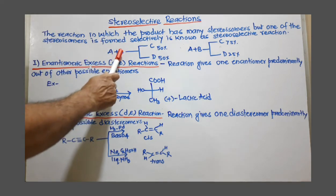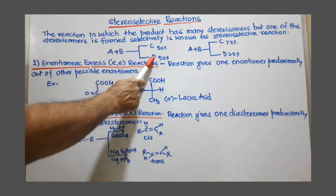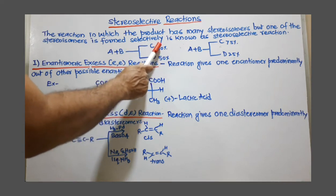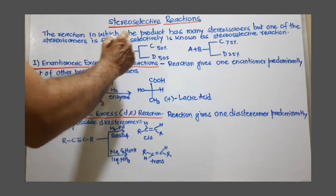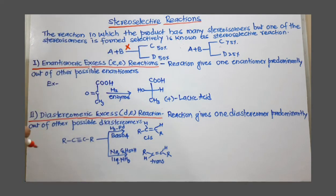For example, A plus B gives you C and D. But here, C and D are in 50-50 proportion. So there is no selection. This is not a stereoselective reaction.